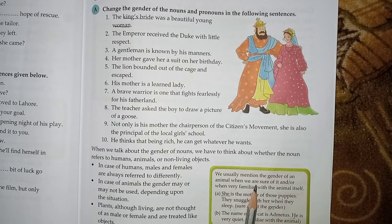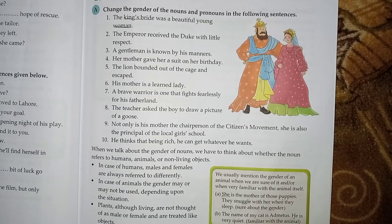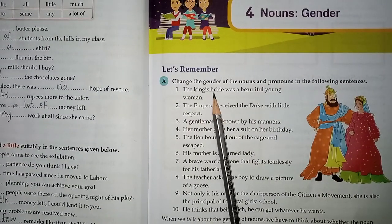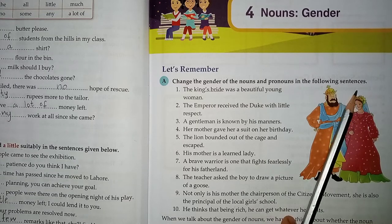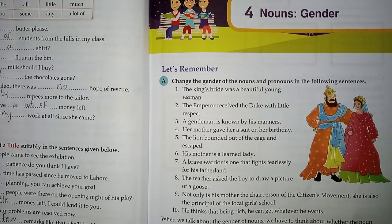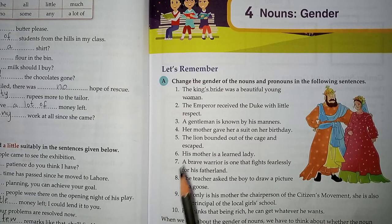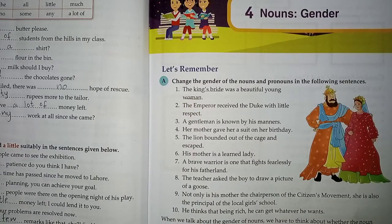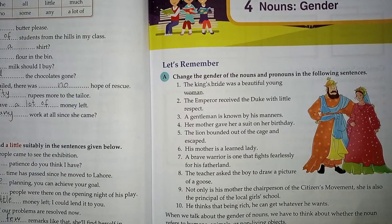Now we will do Exercise A: Change the gender of nouns and pronouns in the following sentences. We are given sentences, and we have to change the gender of the nouns and pronouns. For example, if there is 'king,' we change it to 'queen'; if there is 'he,' we change it to 'she.' I will show you the pattern that you will do in the notebook.